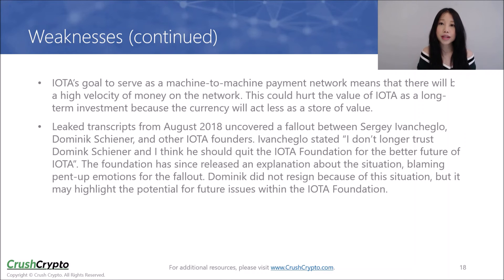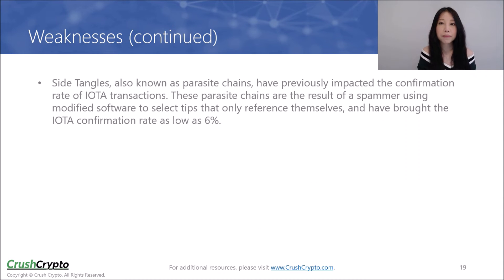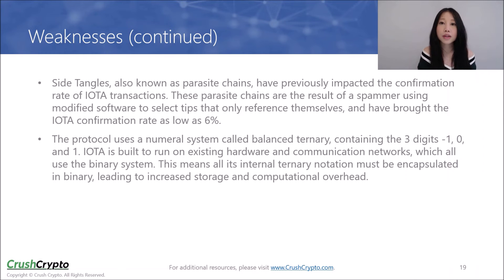Leaked transcripts from August uncovered an internal conflict within IOTA. The Foundation has since released an explanation about the situation, blaming pent-up emotions for the fallout. While no one resigned because of the situation, it may highlight the potential for future issues within the IOTA Foundation. Side tangles, also known as parasite chains, have previously impacted the confirmation rate of IOTA transactions. These parasite chains are the result of a spammer using modified software to select tips that only reference themselves, bringing the IOTA confirmation rate to as low as 6%. The protocol also uses a numeral system called Balanced Ternary containing the three digits negative one, zero, and one. IOTA is built to run on existing hardware and communication networks which all use the binary system, meaning all its internal ternary notation must be encapsulated in binary, leading to increased storage and computational overhead.